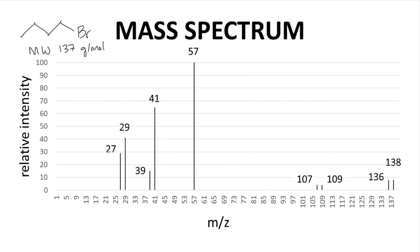In the case of molecules with bromine, this pattern is common. Bromine has two common isotopes, bromine-79 and bromine-81, that are present in roughly a 1 to 1 ratio.